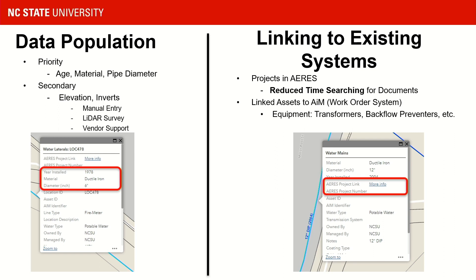Once I converted these CAD utilities into GIS, I began populating data. Priorities included things like age, material, and pipe diameter for water lines or sewer. Secondarily I looked at elevation data, rim elevation, and inverts — some from manual entry from project information, some derived from LiDAR, and some supported by vendors. More importantly, I saw the opportunity to link projects from our records system ARIES to our utilities. I also linked assets like transformers and backflow preventers to AIM, our work order management system, so planners and estimators can easily pull up work order history.